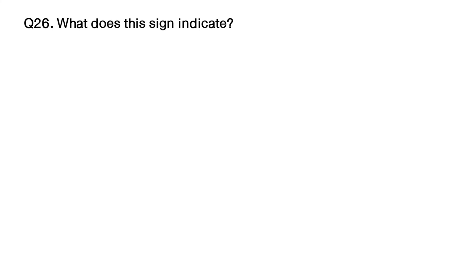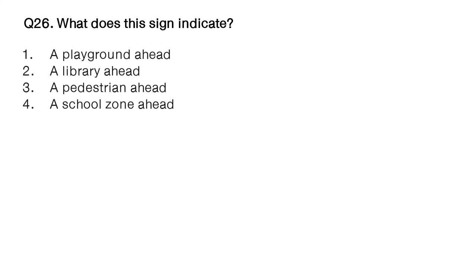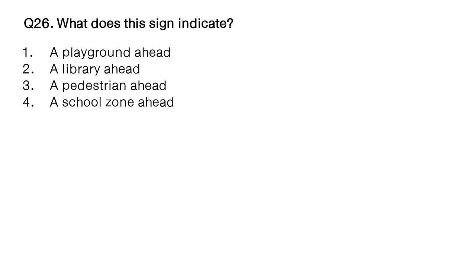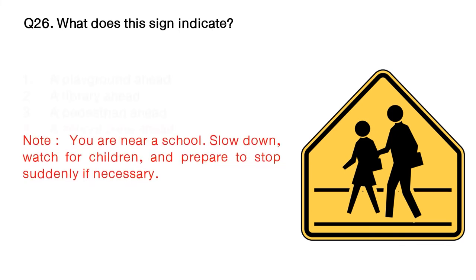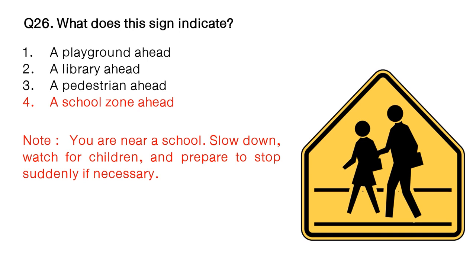Question: what does this sign indicate? Option number 1: a playground ahead. Option number 2: a library ahead. Option number 3: a pedestrian ahead. Option number 4: a school zone ahead. The answer is option number 4: a school zone ahead. Note: you are near a school. Slow down, watch for children, and prepare to stop suddenly if necessary.